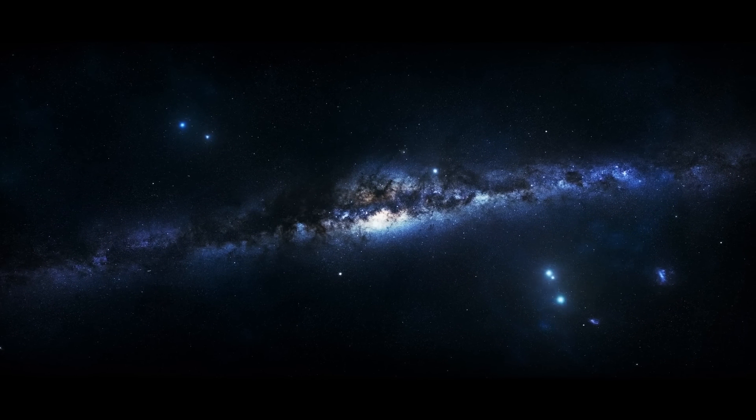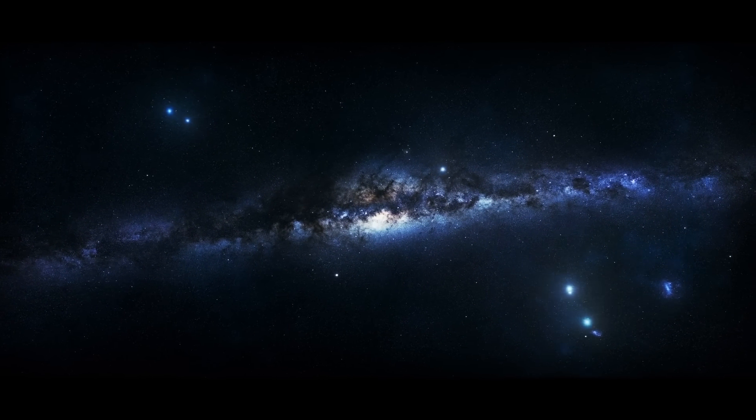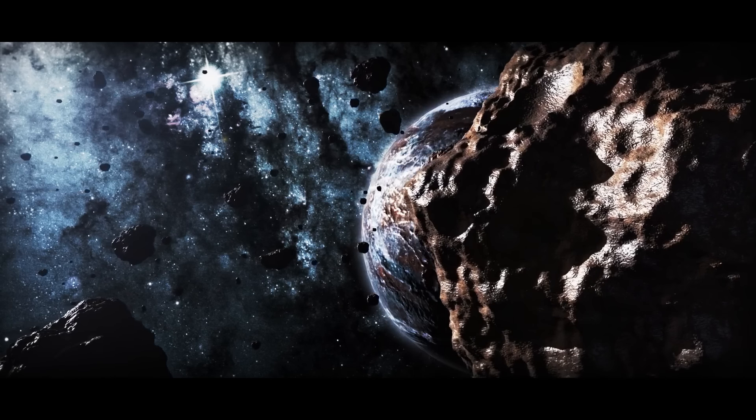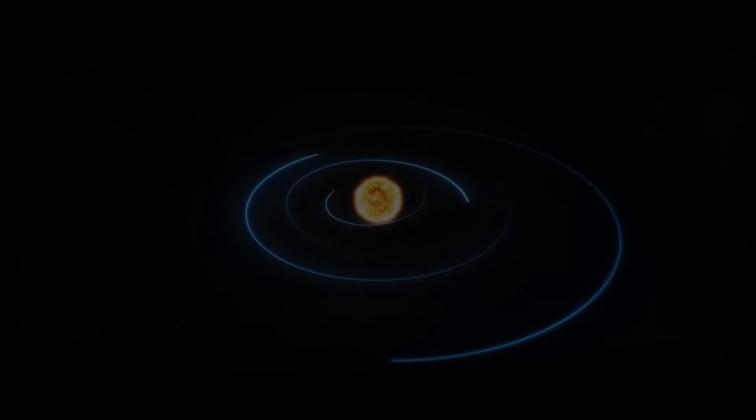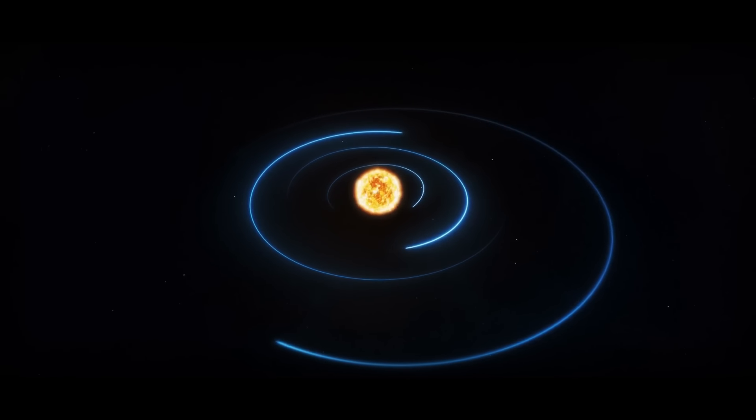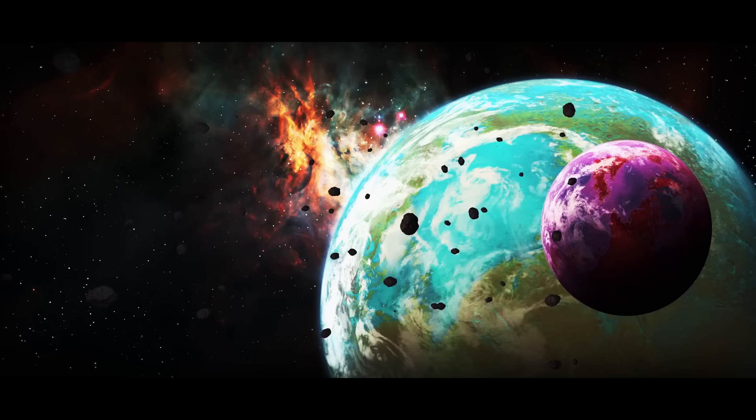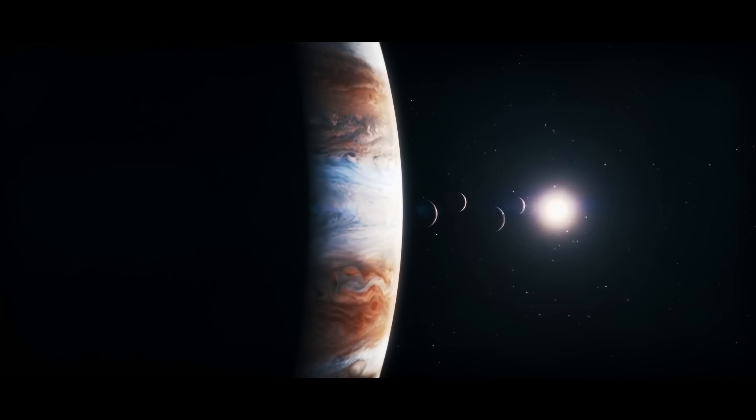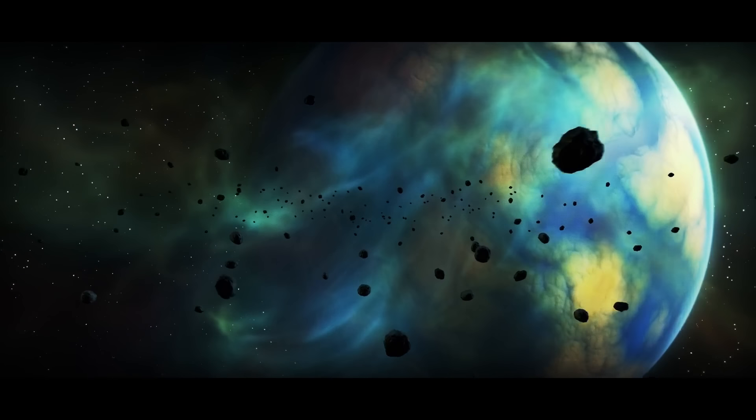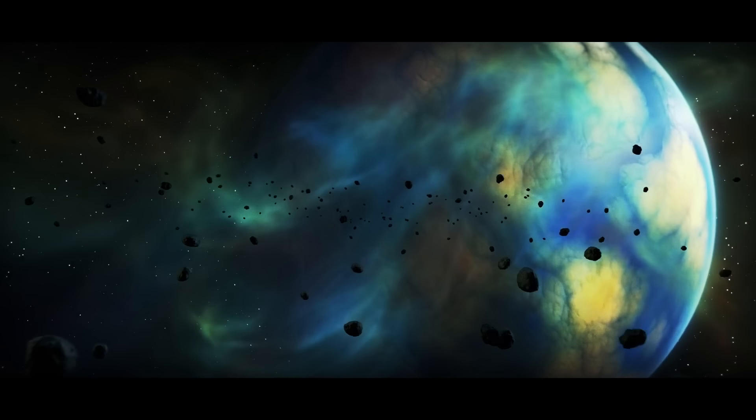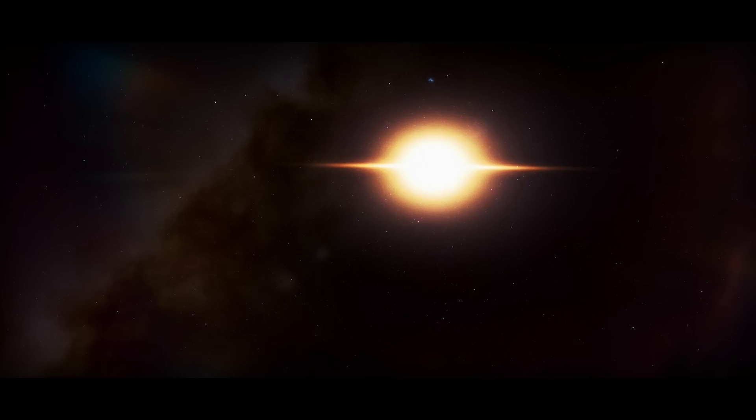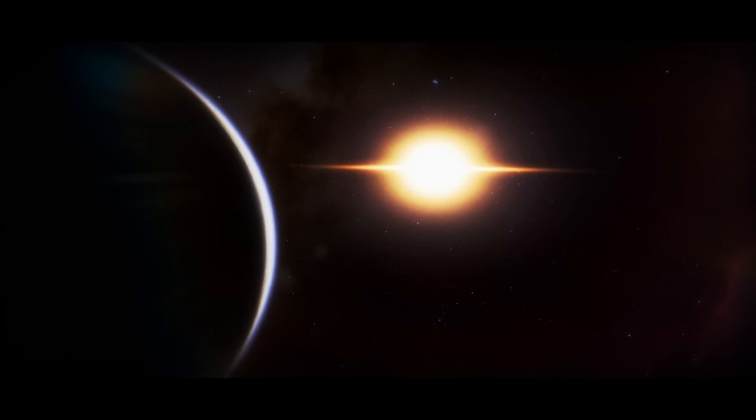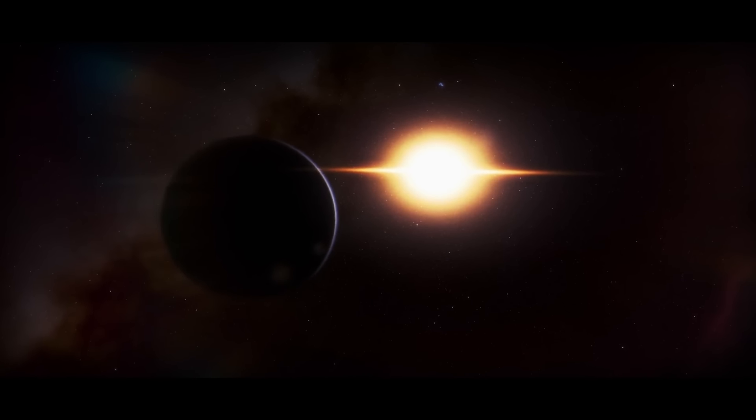But new findings say there could be something else lurking in the dark. Besides dwarf planets and tiny space bodies, maybe even a new planet. Models scientists made say that our solar system used to have one or more rocky planets the size of Mars or Earth. Over time, these rocky wanderers interacted with the wide gravity fields of our gas giants. This kicked them into a far-out orbit, away from the neighborhood.